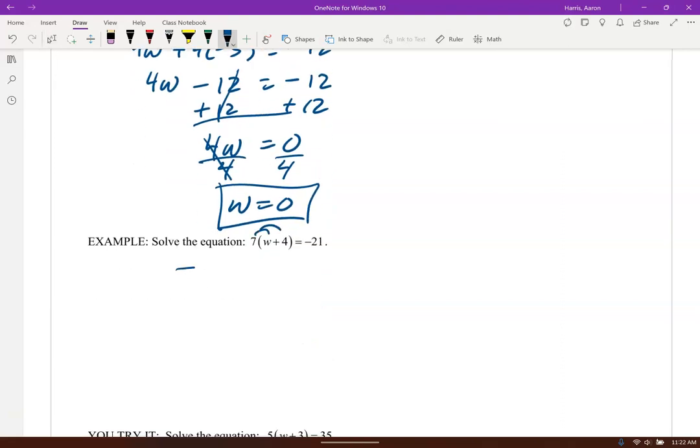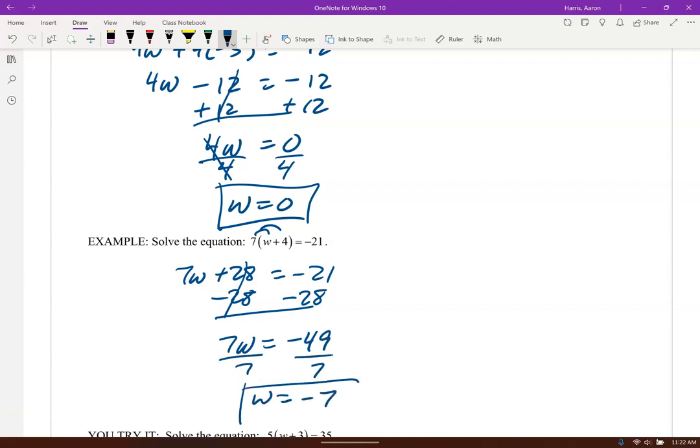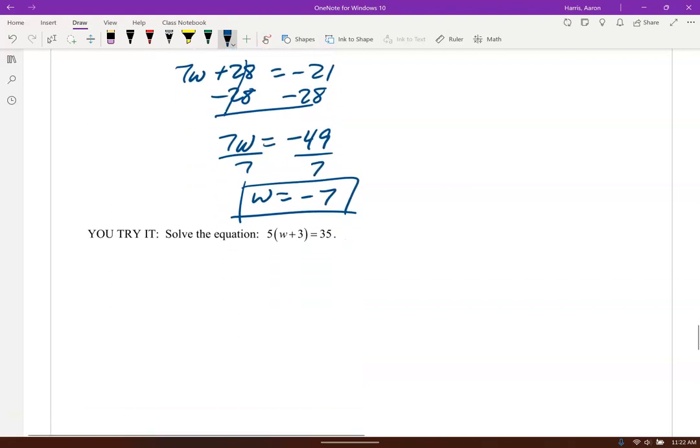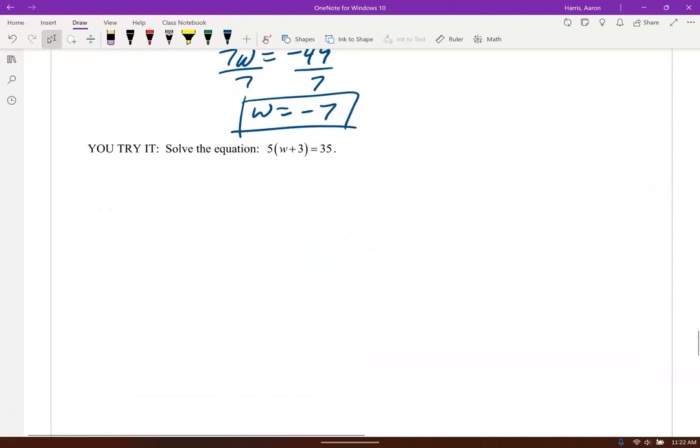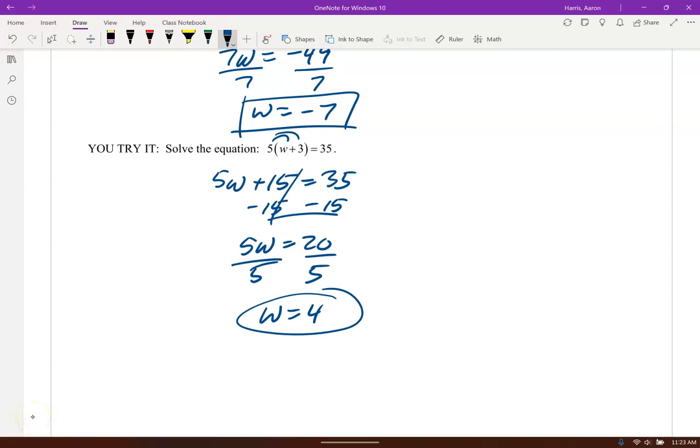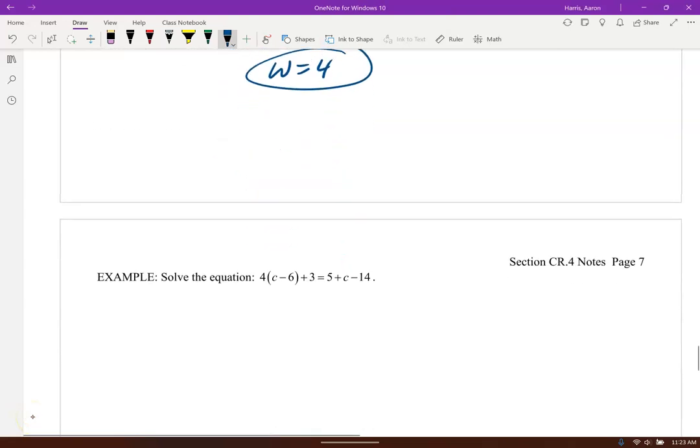Let's go ahead and distribute right here. 7 times 4 is 28, equals negative 21. Now we're going to subtract 28 on both sides. We've got negative 49. Divide by 7. And we've got negative 7. You guys go ahead and try that one. Check yourself there with that solution. Let's keep going there.